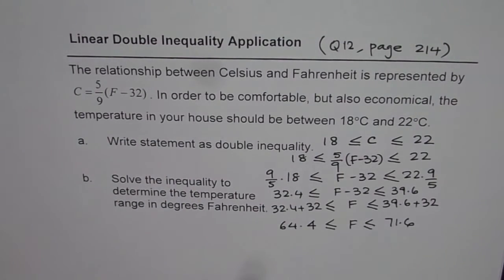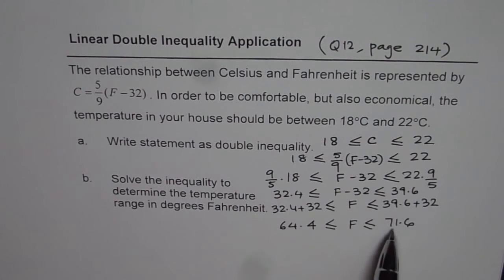When we solve this inequality, the temperature range in degrees Fahrenheit should be 64.4 is less than or equal to F is less than or equal to 71.6. In Fahrenheit, the temperature should be between 64.4 and 71.6. That is our solution.